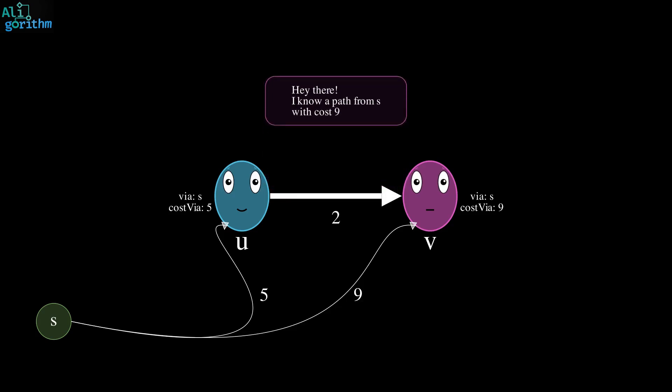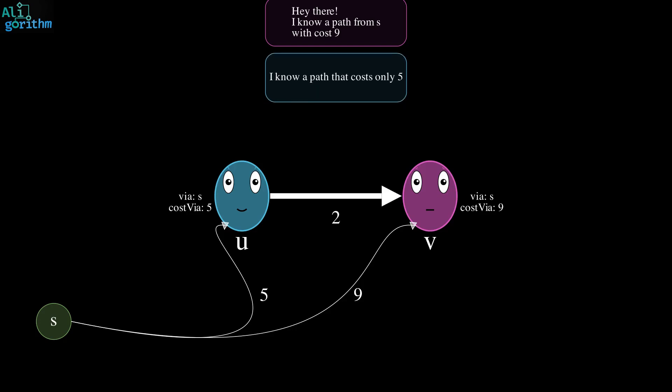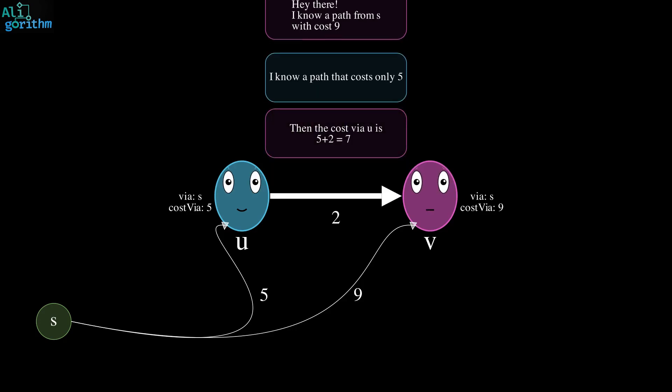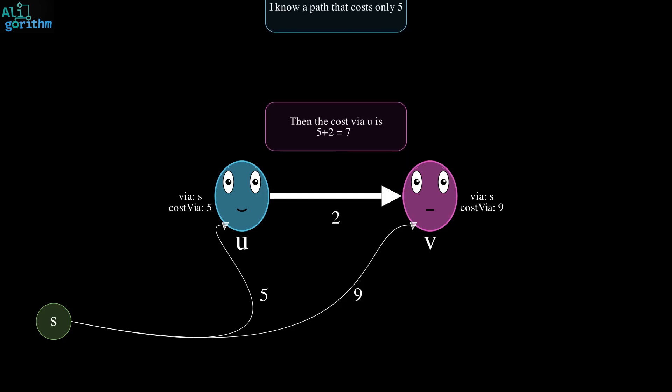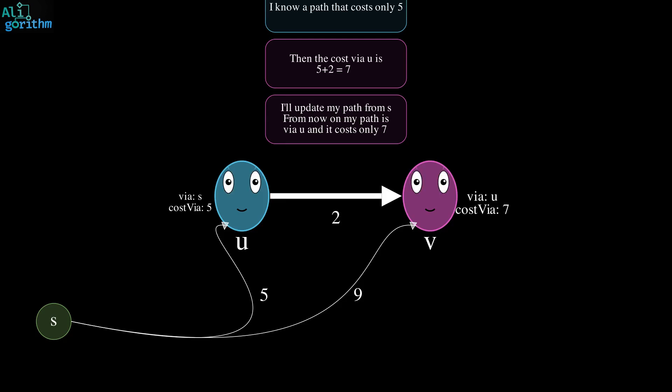Hey, how are you? I'm aware of a path from S with cost 9. What? That's too expensive. I know a path with cost only 5. What? 5? This means that it would cost me 5 plus 2, that's 7 to go through U. Interesting. I'll update my via and cost via variables. From now on, it's via U with a cost of 7.